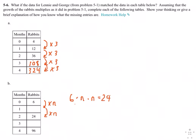So this is 6N squared equals 24, and then I can divide by 6, and I get N squared equals 4. So N equals plus or minus 2, but we know we're multiplying by a positive.